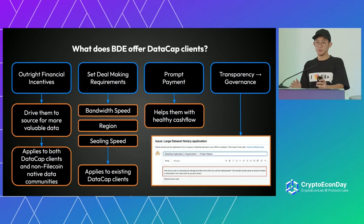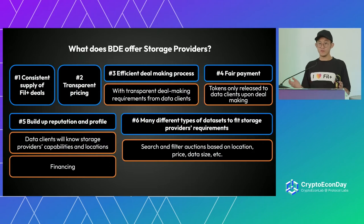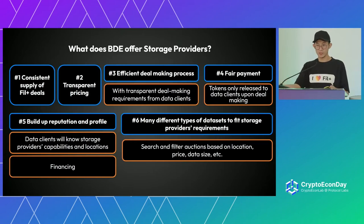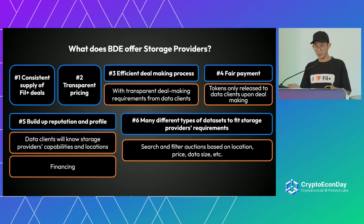For storage providers, we provide a consistent supply of Fil+ deals and transparent pricing, so it's efficient for everyone. There's also an efficient deal-making process, which means you can onboard data at a faster pace. When your sealing capacity becomes available you can get Fil+ on demand. There's fair payment — we don't release tokens until deal-making is done. There are also many different types of data available, so if you're a small storage provider looking for a small data size you can find it easily on BDE.